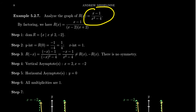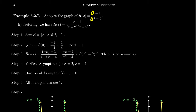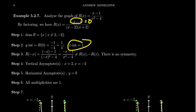To find the domain, we factor the denominator. It's a difference of squares, so we get (x − 2)(x + 2). Setting the denominator equal to zero, the domain will be everything except 2 and negative 2. For the y-intercept, plug in x = 0: you get negative 1 over negative 4, which gives one-fourth. For x-intercepts, set the numerator equal to zero: x − 1 = 0, giving x = 1.